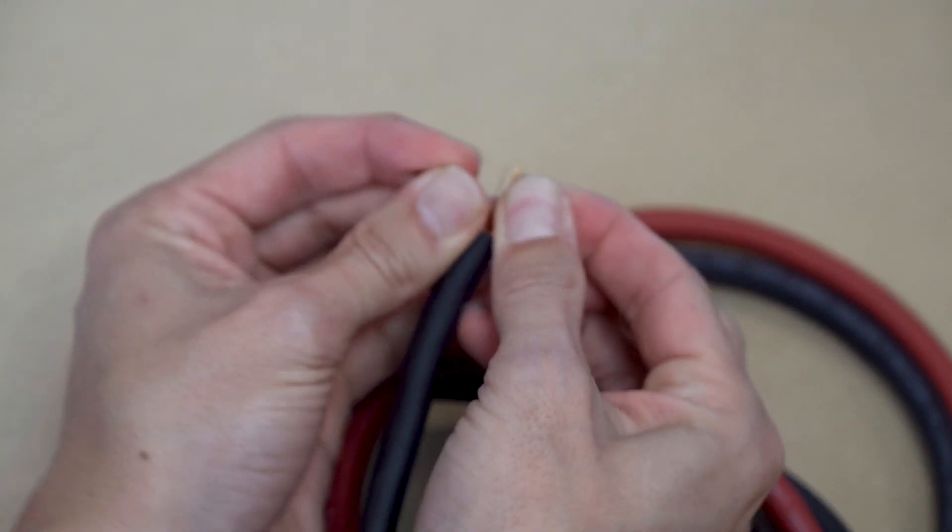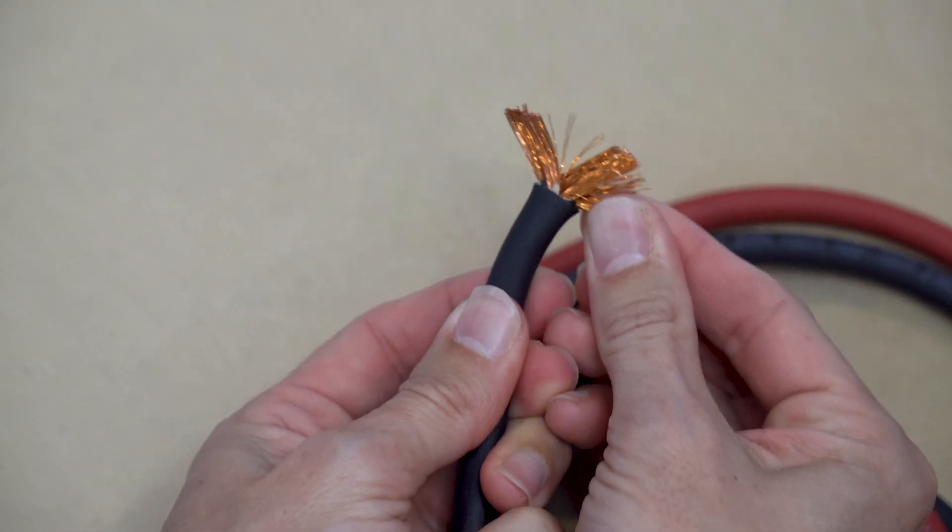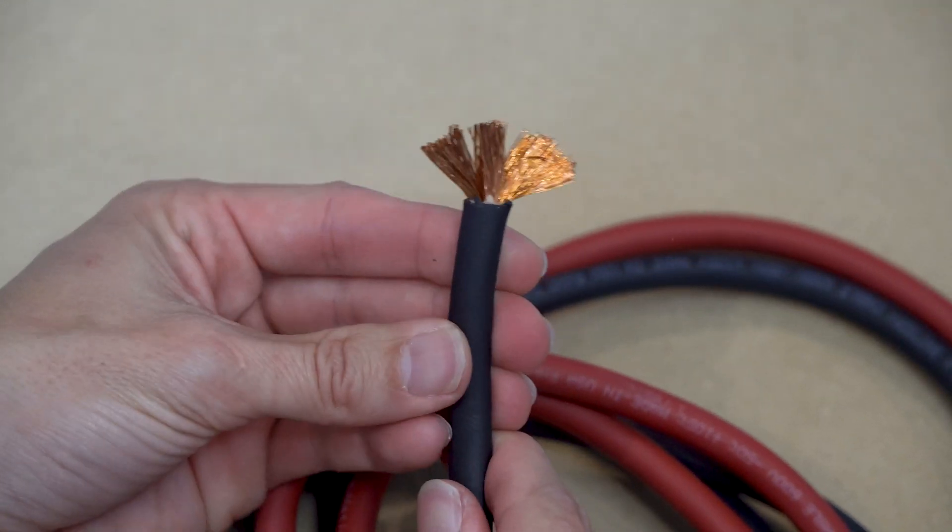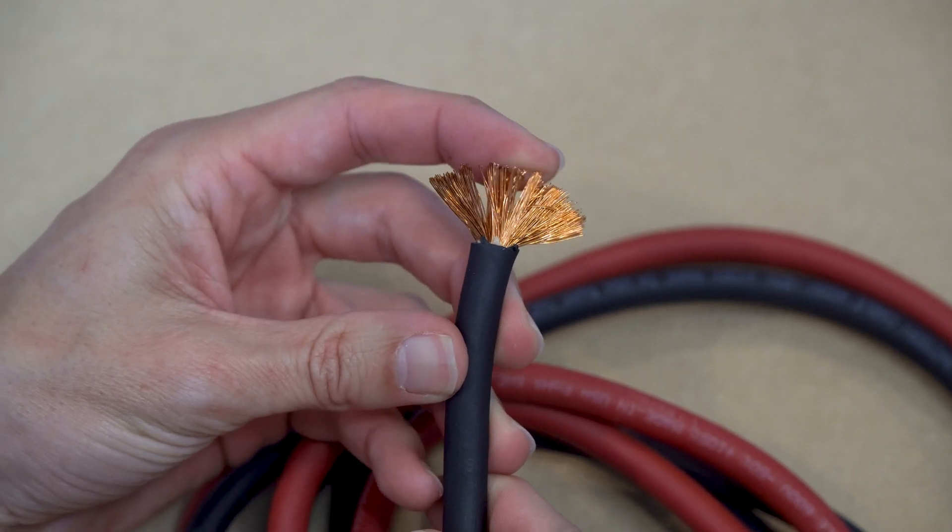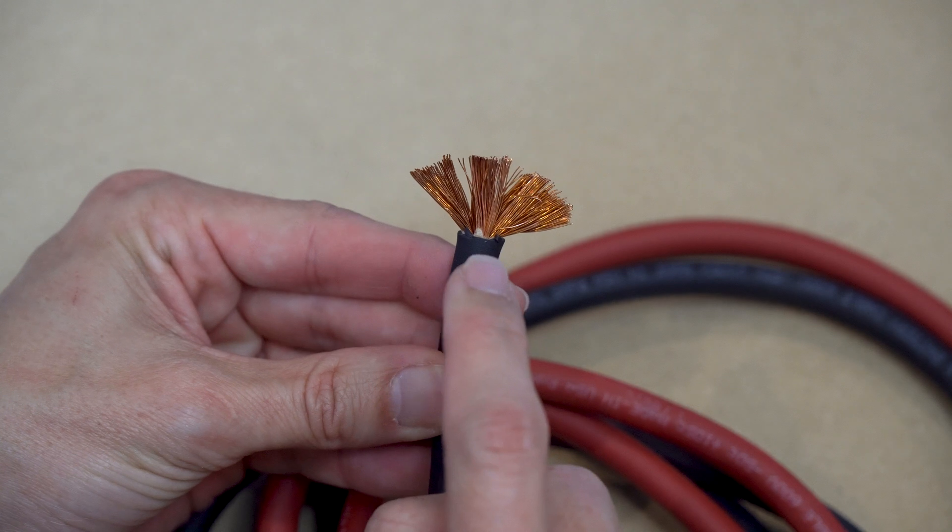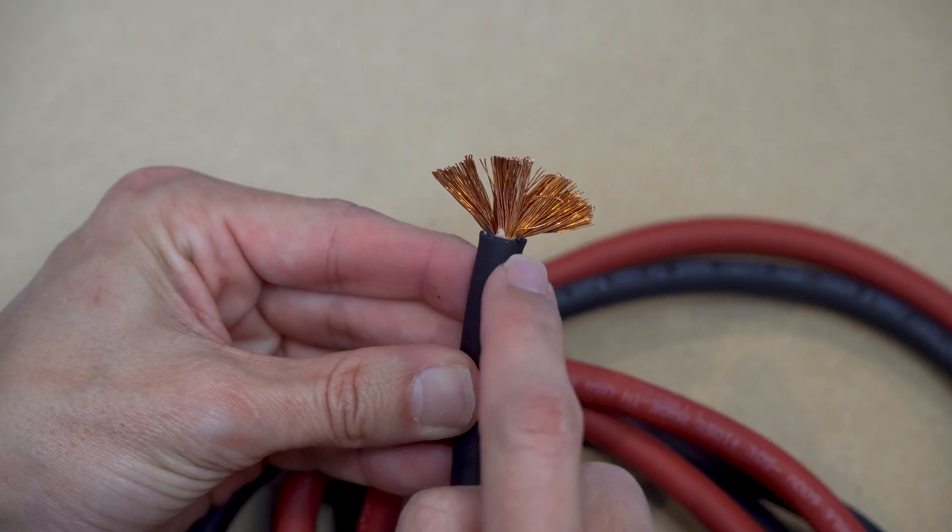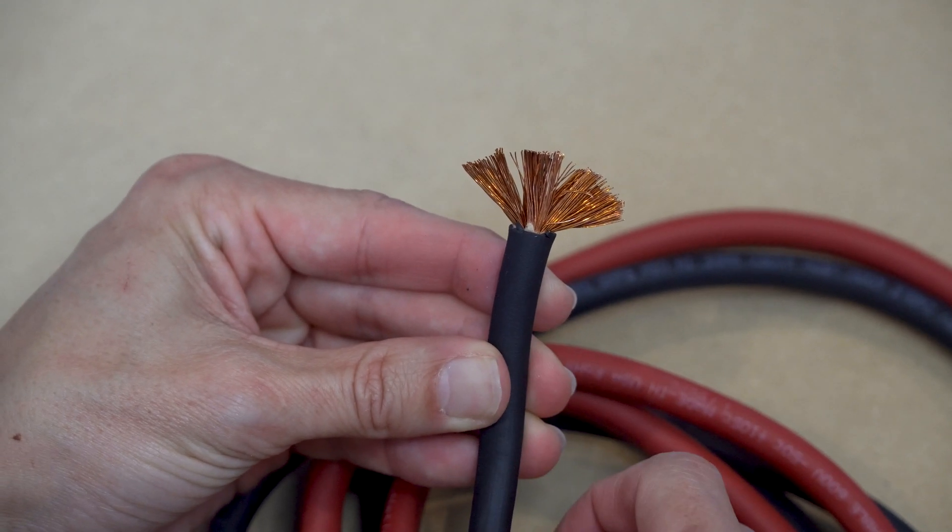When I fan out the strands, you can really see just how many individual conductors there are in this 4-gauge wire. And according to the manufacturer, there are over 370 individual copper strands here. This is great for wire flexibility.